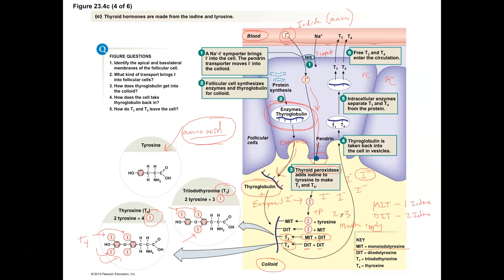Then we need to stimulate the thyroid gland in order to endocytose that thyroglobulin back into the follicular cells. To do that, we use the hormone TSH — thyroid stimulating hormone — which is an anterior pituitary hormone. TSH comes along, stimulates the thyroid gland, and triggers these follicular cells to endocytose. We're going to endocytose material from the colloid and bring material back into the follicular cell.